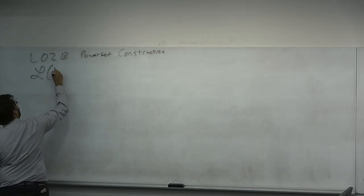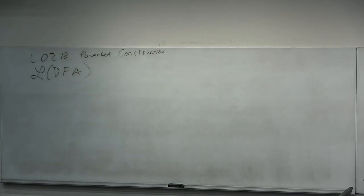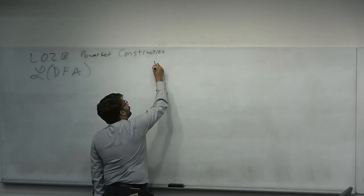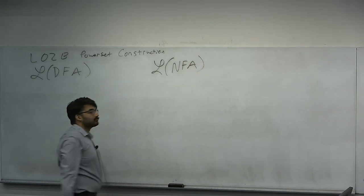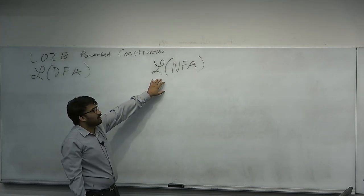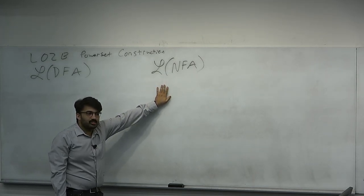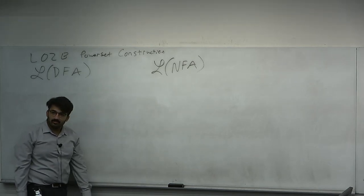Recall, LDFA is the class of languages decidable by a DFA. If L is in LDFA, if there is a language in LDFA, you know it's regular. A regular language is one that has a DFA for it. So these are the class of languages decidable by DFAs. We also defined the class of languages decidable by an NFA. So if a language is in LDFA, it has a DFA for it. If a language is in LNFA, it has an NFA for it.